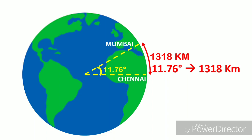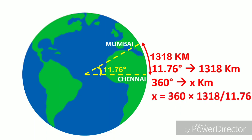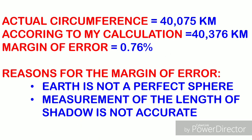If 11.76 degrees equals 1,318 km, what does 360 degrees equal? The distance is equal to 360 times 1,318 divided by 11.76, which equals 40,376 km. The actual circumference is 40,075 km, which means there is around 1% error in the calculation. There are two reasons for this slight margin of error: number one, the Earth is not a perfect sphere; number two, the measurement of the length of the shadow is not perfectly accurate.